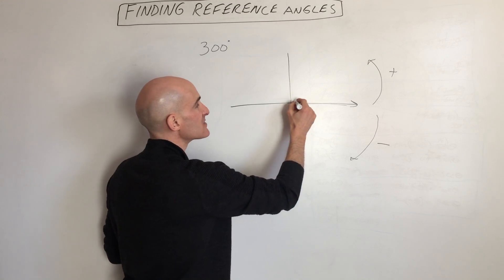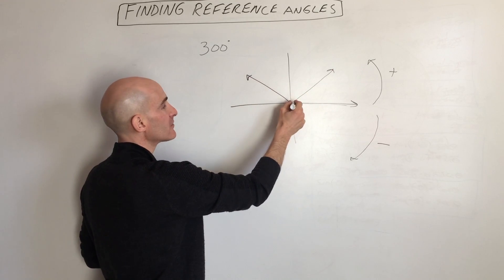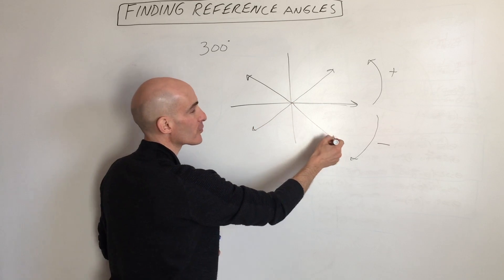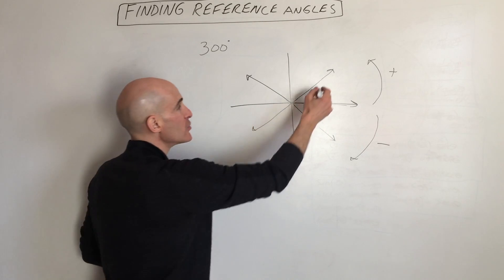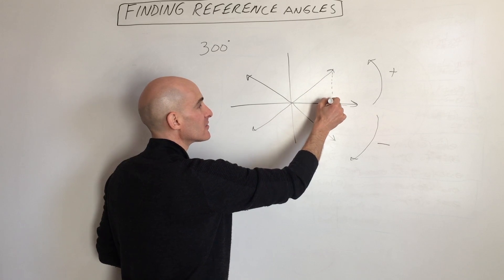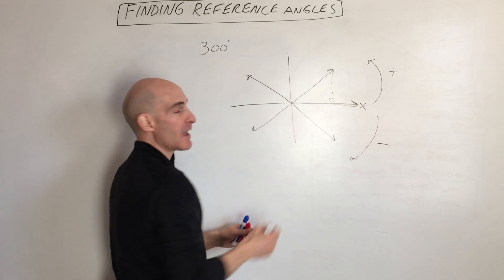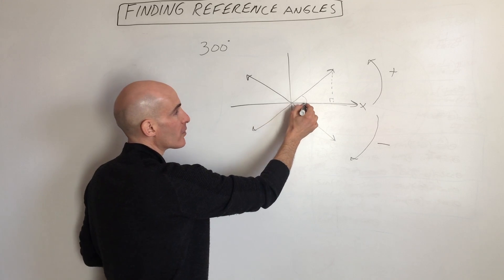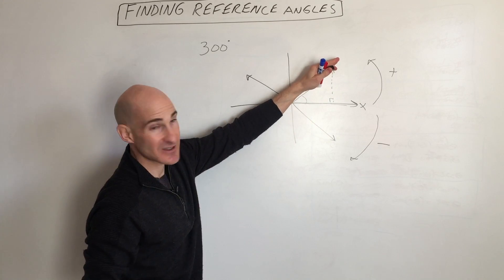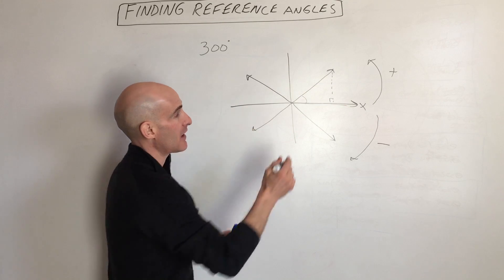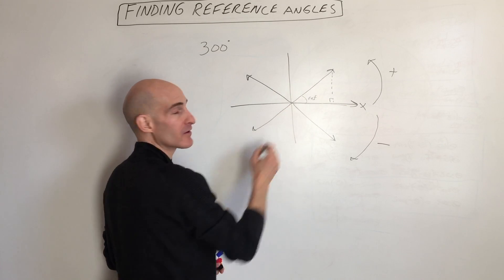Wherever this angle ends up — whether it's in the first, second, third, or fourth quadrant — you want to drop a perpendicular to the x-axis. The angle that's formed between the terminal ray, where it terminates or stops, and the x-axis, that's your reference angle.